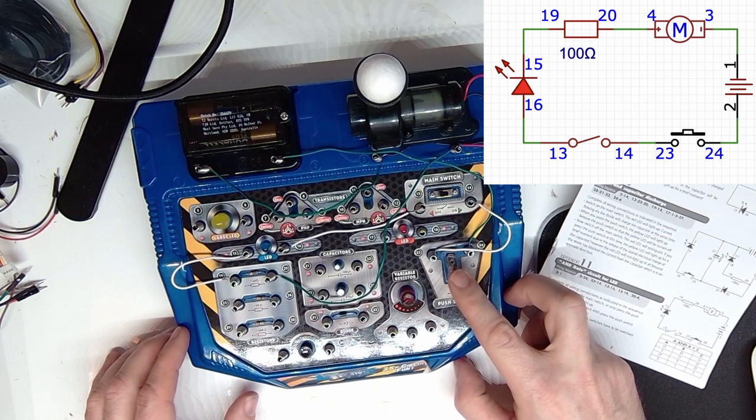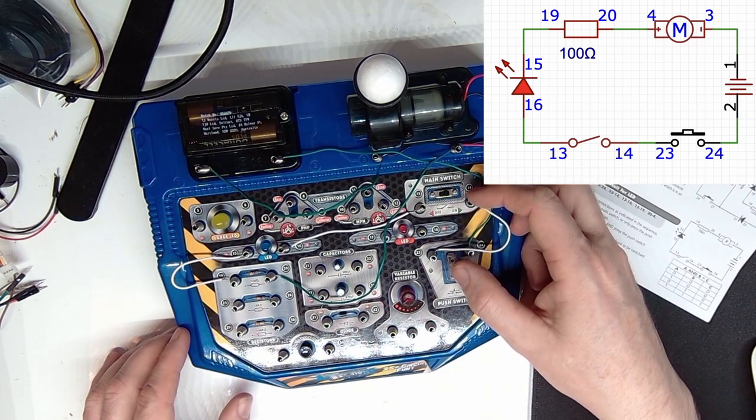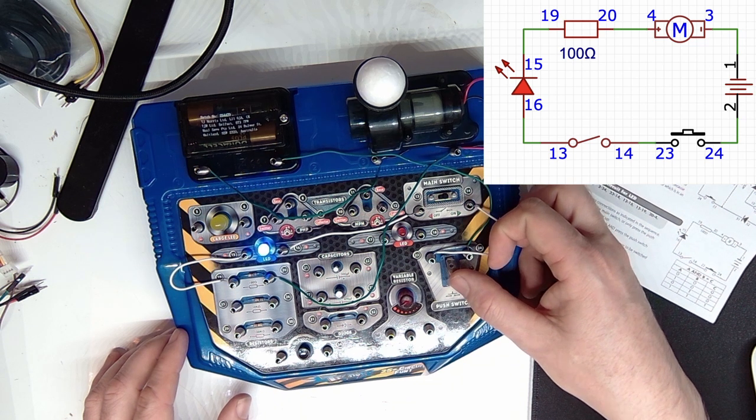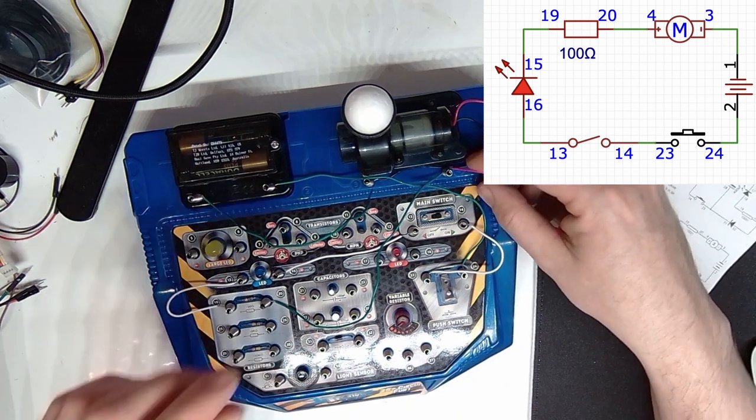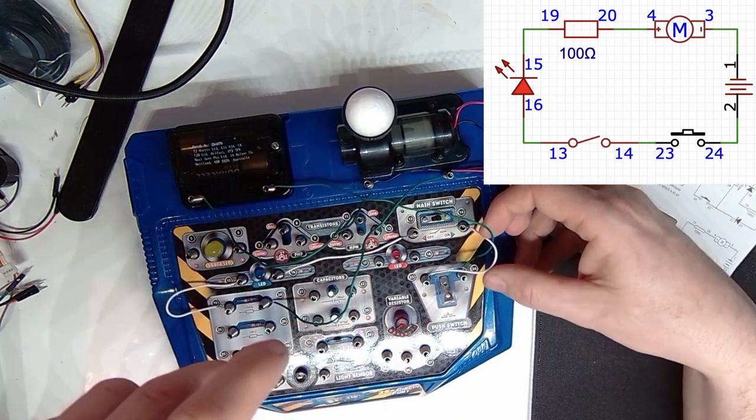Press the push switch, nothing. Press that switch, nothing. But you press the two at the same time, and the LED lights up but the motor does nothing. Why does the motor do nothing?